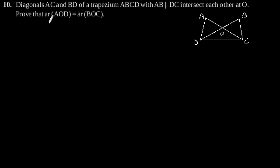Exercise 9.3, Question number 10. Diagonals AC and BD of a trapezium ABCD with AB parallel to DC intersect each other at O. Prove that area of AOD is equal to area of BOC.